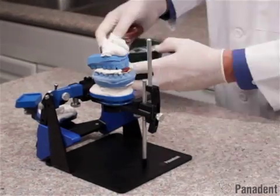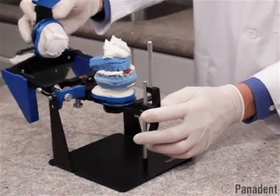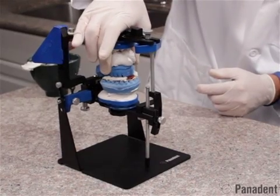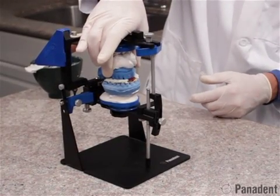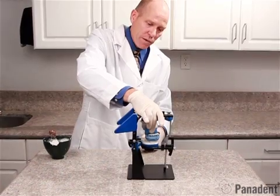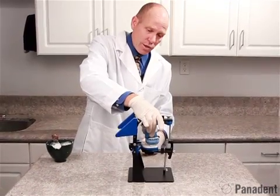All we need to do is just make a connection. So we'll swing this around, making a connection of the plaster to the mounting plate. And actually you can reach around and actually hold that lower cast into the interocclusal record for the initial set. So we'll go ahead and let this set at this time.